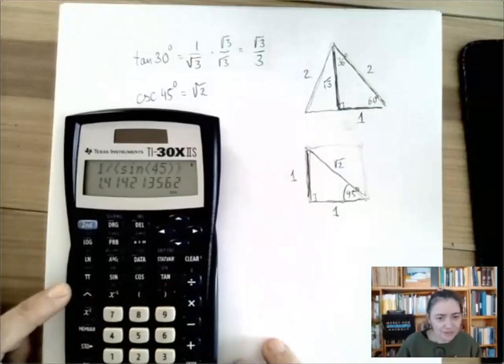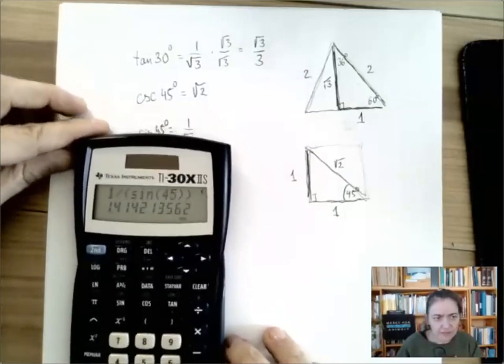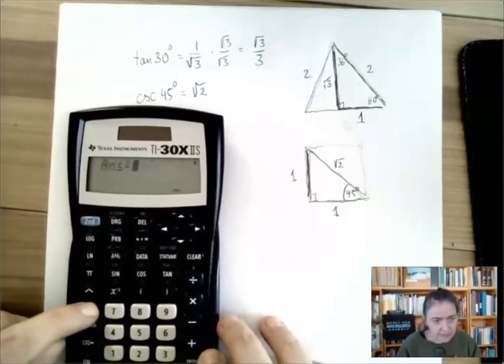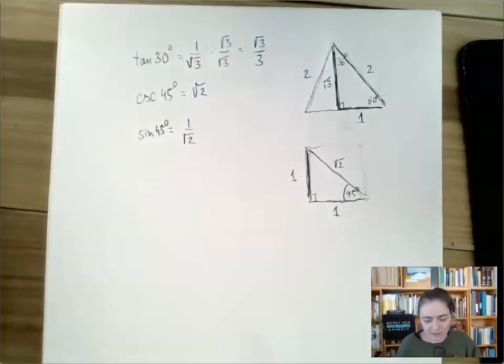And then make sure we close as many parentheses as we opened right there. And if you don't recognize square root of two yet, well, square root of two is a number that if we square, we should get two. So if I square this, there we go. Our answer is probably correct.